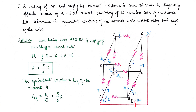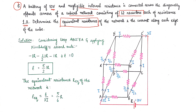Hello students, in today's class we will be solving example problem 5 from NCERT. The question is: a battery of 10 volt and negligible internal resistance is connected across diagonally opposite corners of a cubical network consisting of 12 resistors each of resistance 1 ohm. Determine the equivalent resistance of the network and the current along each edge of the cube.